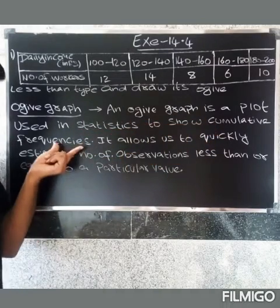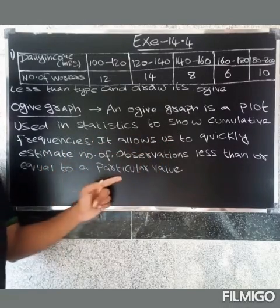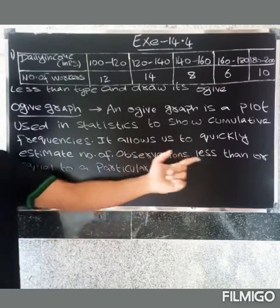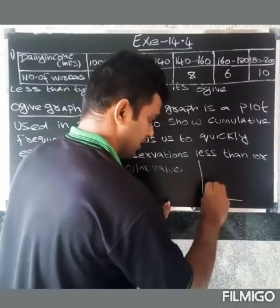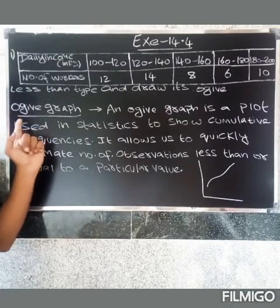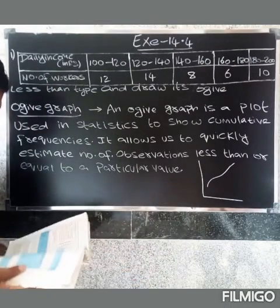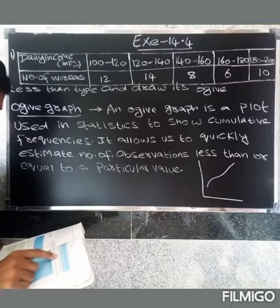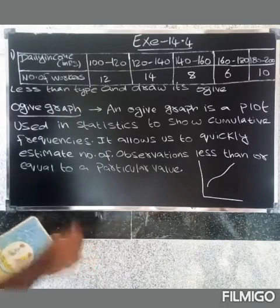It allows us to quickly estimate the number of observations less than or equal to a particular value. The first question is: the following distribution gives the daily income of 50 workers of a factory. Convert the distribution to a less than type cumulative frequency distribution and draw an OGF graph. There are two types of OGF graph.